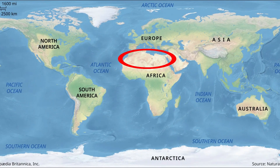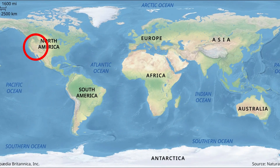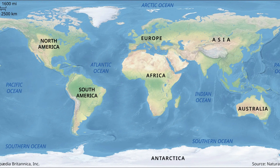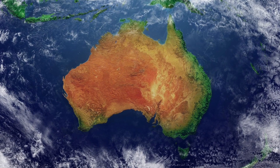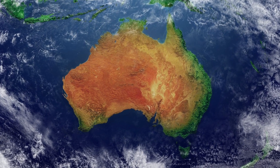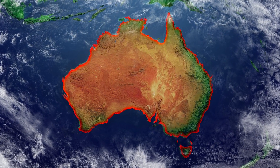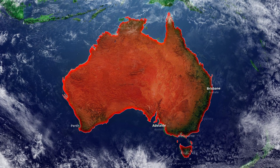Hot, dry places like the Middle East, North Africa, and the west of the US are ideal. But the highest density of flies can be found in Australia, because there are a lot of hot, dry places on that continent — though not mainly in the areas where people live.